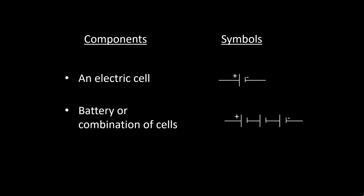Next component is battery or combination of cells. A battery consists of one or more electrochemical cells. In a battery, one terminal is positively charged and one terminal is negatively charged.